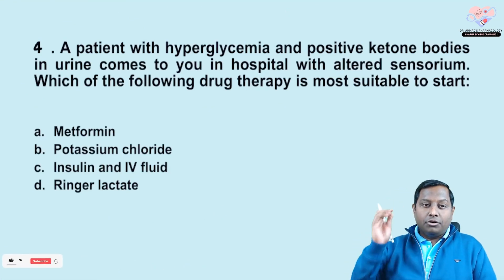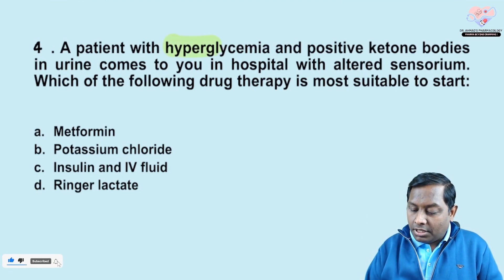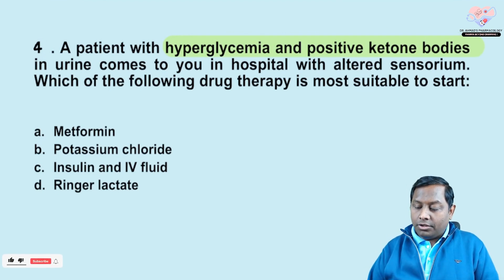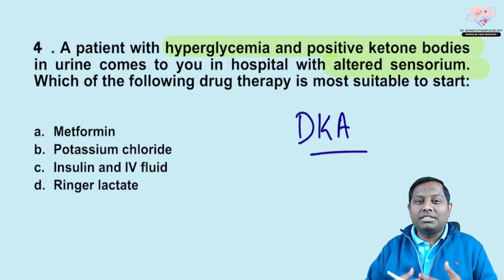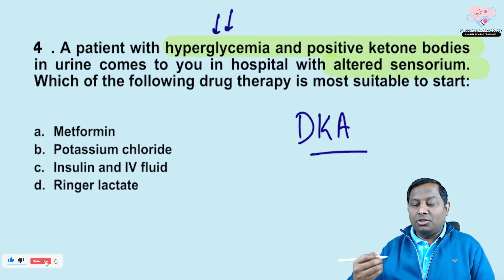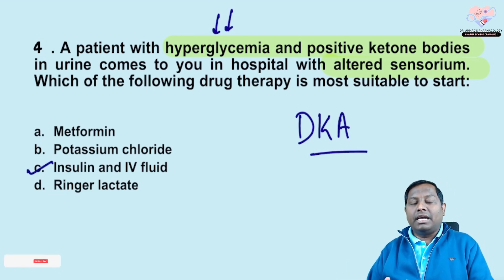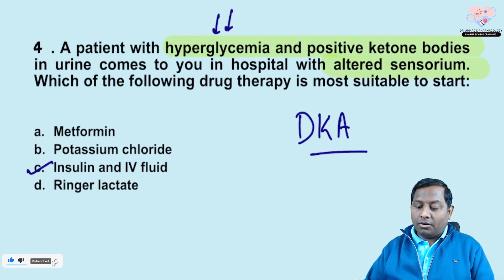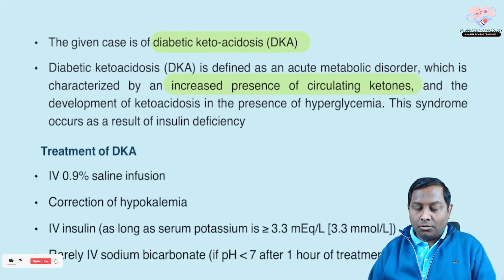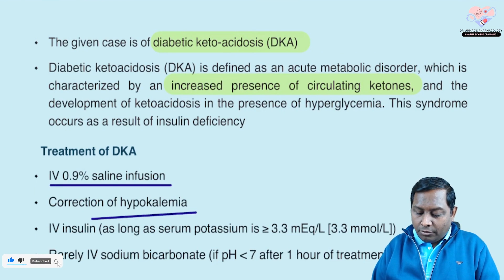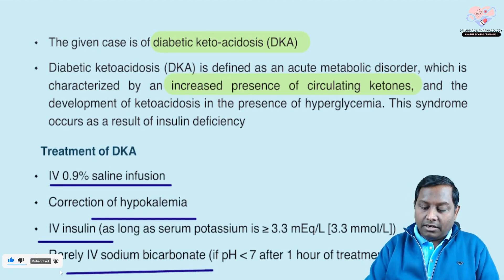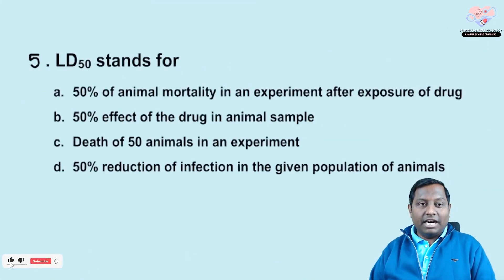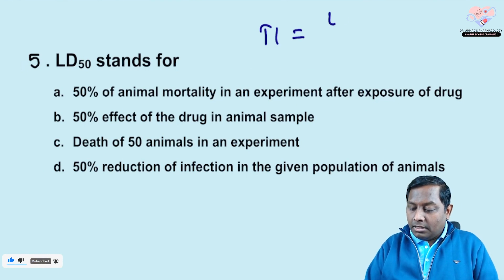Next question: a patient with hyperglycemia and positive ketone bodies — whenever you see this combination, always think of diabetic ketoacidosis (DKA). The patient presents with altered sensorium. The sugar level is so high that the blood is like syrup, so you need to increase hydration and control glucose. The mainstay of therapy is IV fluid and insulin, along with correction of electrolyte imbalance, particularly hypokalemia. IV sodium bicarbonate may also be required if needed.